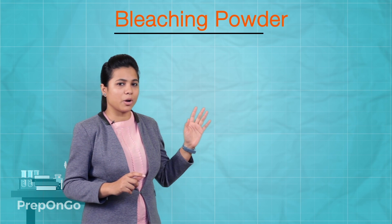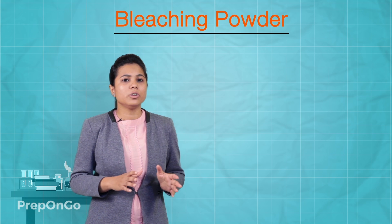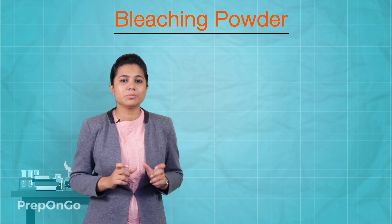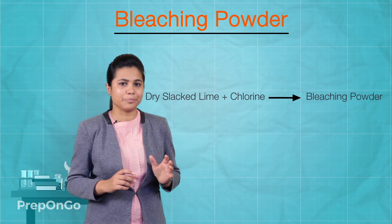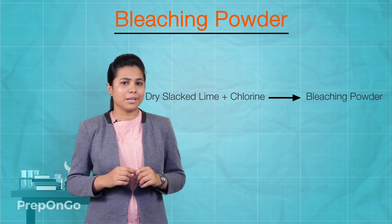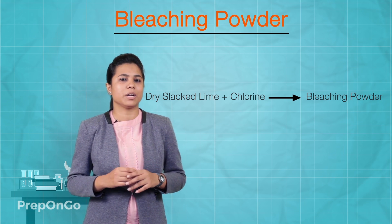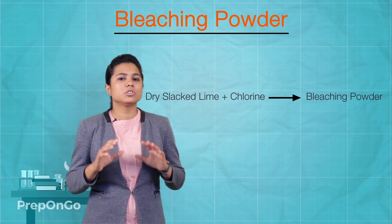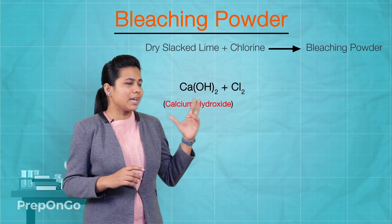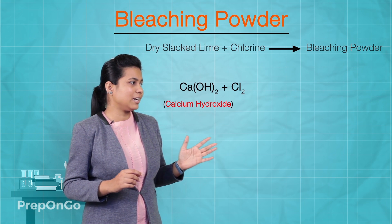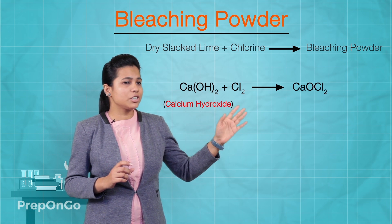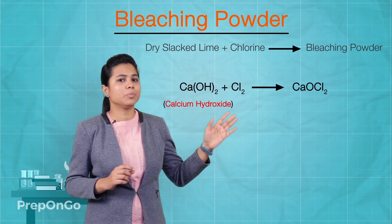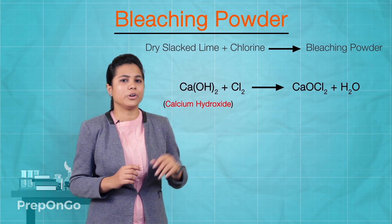The first salt we are going to see is bleaching powder. Bleaching powder uses chlorine and is produced by passing chlorine over dry slaked lime. Dry slaked lime has the chemical formula calcium hydroxide. Calcium hydroxide, which is the dry slaked lime, when reacts with chlorine forms calcium hypochlorite — which is nothing but bleaching powder — and water.